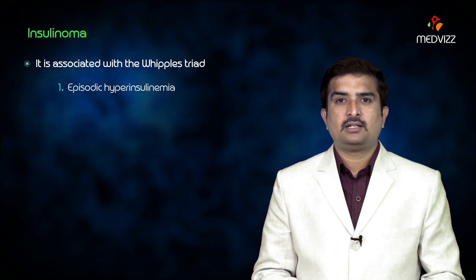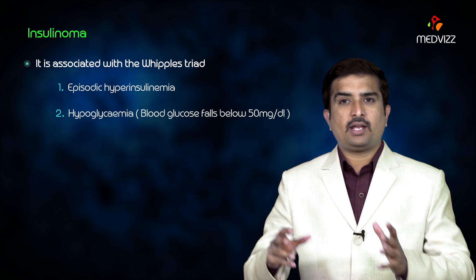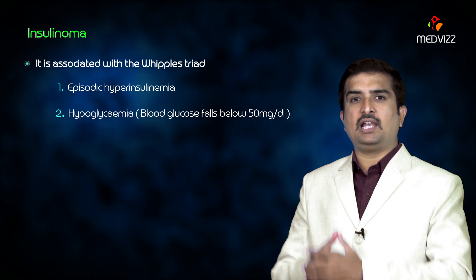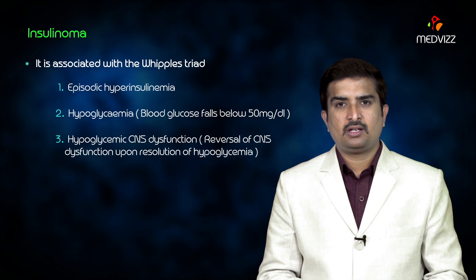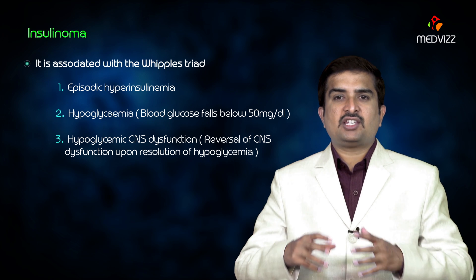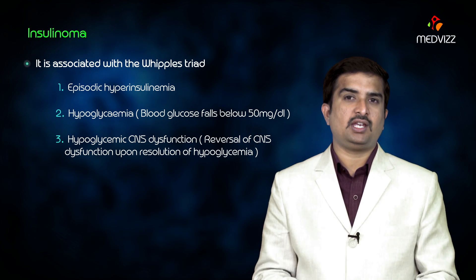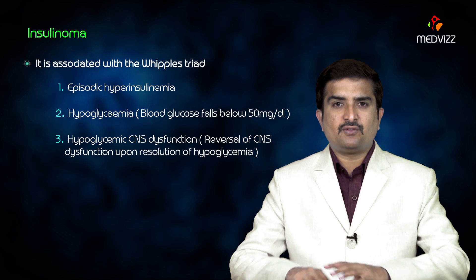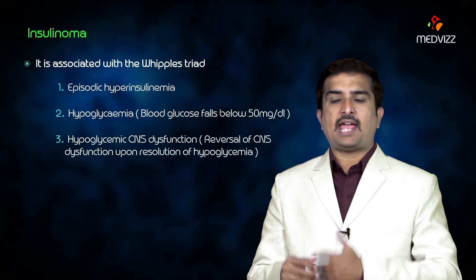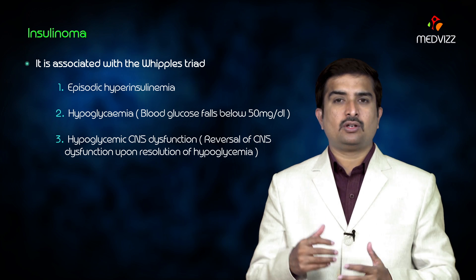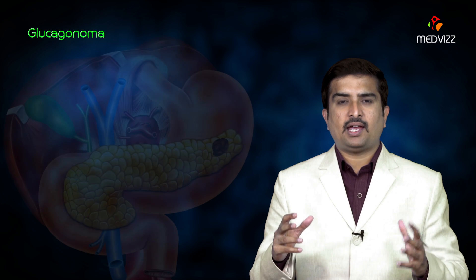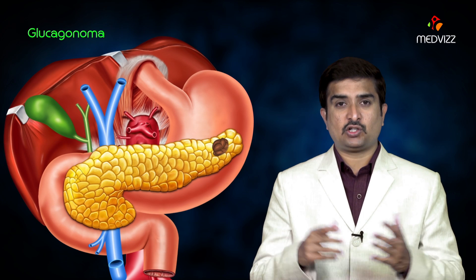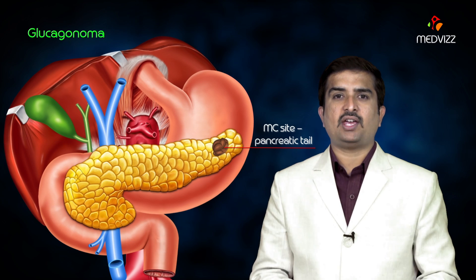Insulinoma is associated with Whipple's triad: episodic hyperinsulinemia, hypoglycemia where blood glucose falls below 50 milligrams per deciliter, and CNS dysfunction. Reversal of CNS dysfunction is seen upon restoration — that is, resolution of hypoglycemia.